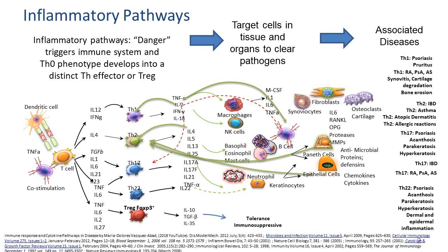The TH2 profile also has a retroactive loop providing positive feedback into producing more TH2s. With allergies, there is a very fast increase in the TH2 response. TH2s produce interleukin-4, which was also the cytokine that differentiated the pluripotent T cells into TH2s. Additionally, products of Paneth cells and epithelial cells — the distal organ targets of the TH2 response — will produce cytokines that further stimulate TH2 development.